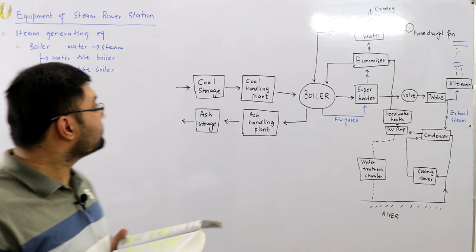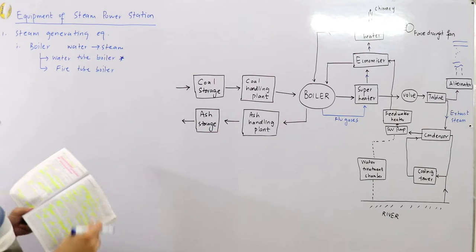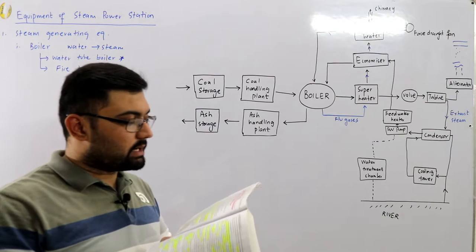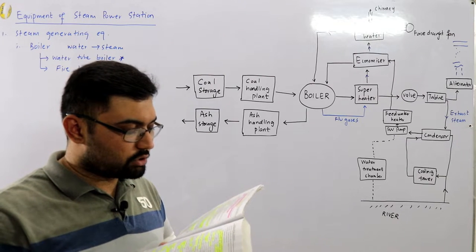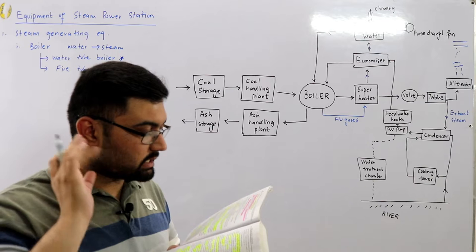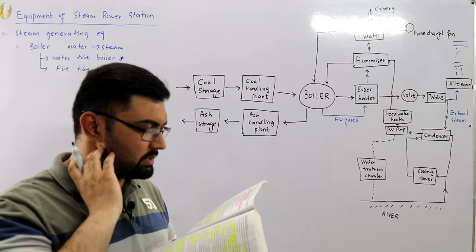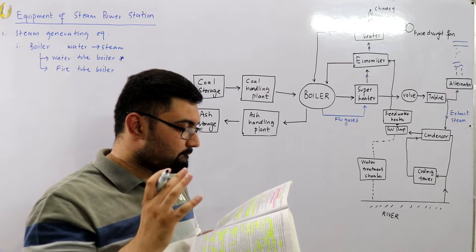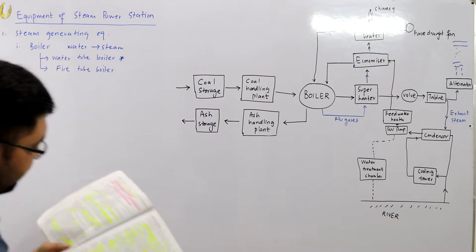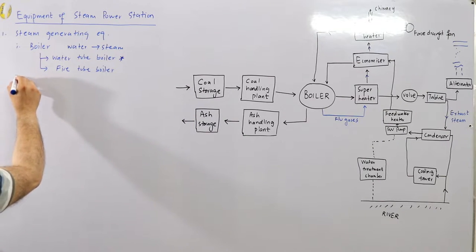Advantages of water tube boilers include: they require less space, smaller size of tubes and drum, high working pressure due to the small drum, and they are less liable to explosion.